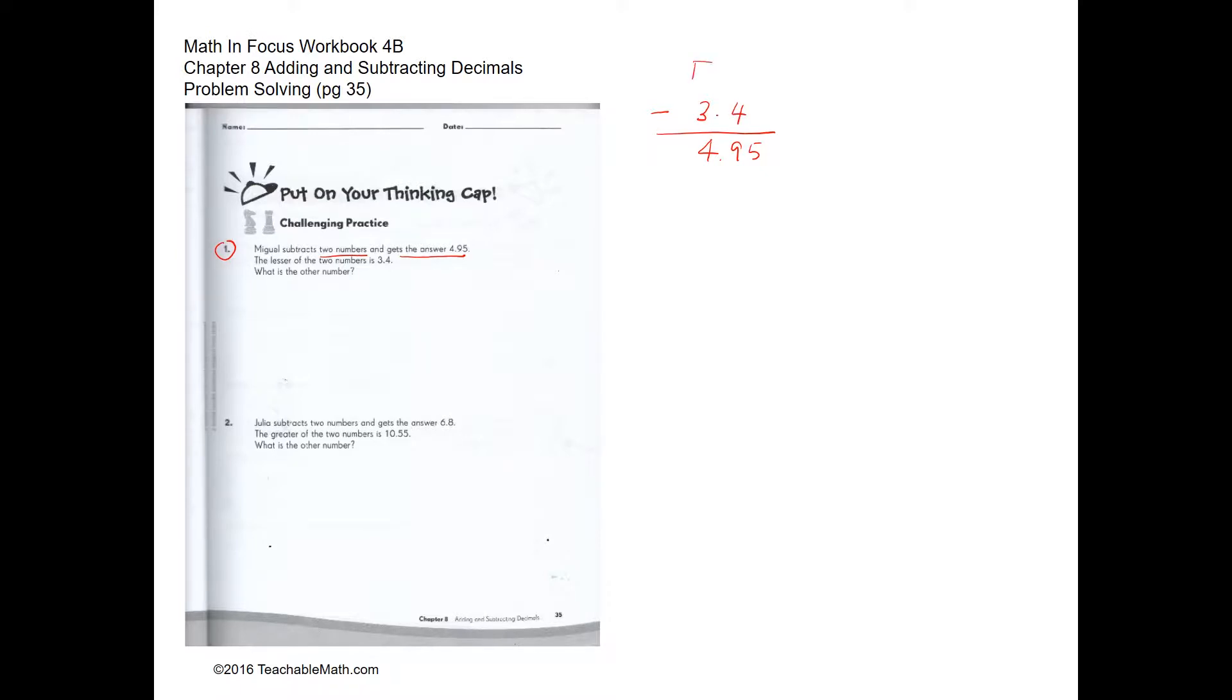So 3.4 is here. So we use a zero over here. So to get to that number, we are going to add. So how do we get this number over here? We're going to add. So this is going to be 5. This is going to be 13 and this is going to be 8.